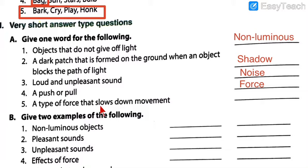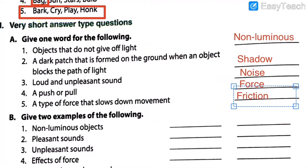Number 5: a type of force that slows down movement. You might wonder how force can slow something down - the correct answer is friction. By friction, we can slow down movement. So that's it for today.